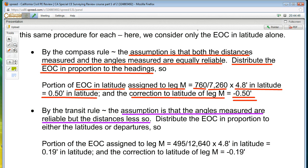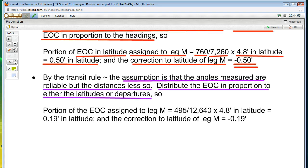The transit rule. You have to distribute the error of closure in a different proportion. This time, it's in proportion to either the latitudes or the departures. So in our problem statement, they told us that the absolute value of the sum of the latitudes was 12,640. We also know that the latitude of just leg M is 495. So it is that proportion that we apply against the 4.8 in latitudes, and we come up with 0.19 in latitude is the portion of the 4.8 feet in latitude error that is assigned to leg M. So the correction, again, is going to be the same value, but opposite sign.